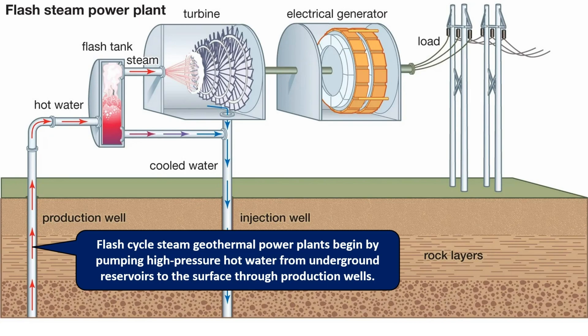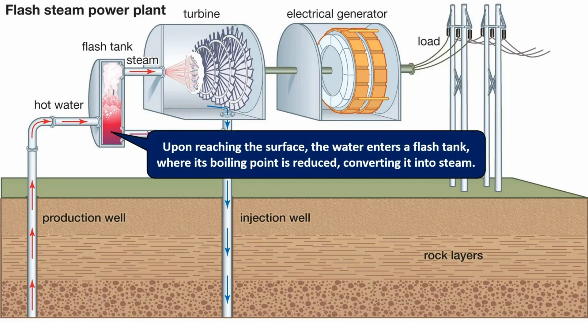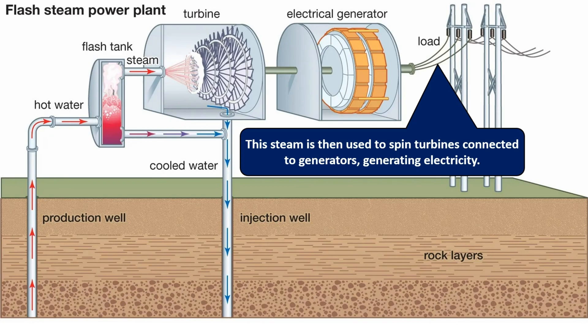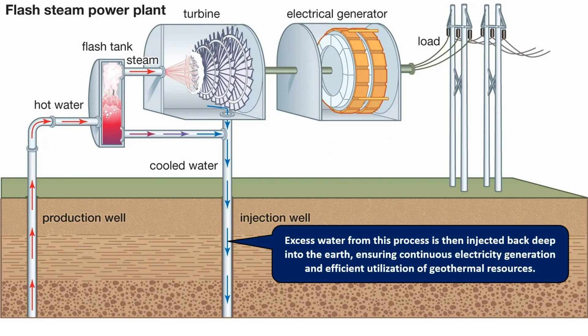Flash steam geothermal power plants begin by pumping high-pressure hot water from underground reservoirs to the surface through production wells. Upon reaching the surface, the water enters a flash tank, where its boiling point is reduced, converting it into steam. This steam is then used to spin turbines connected to generators, generating electricity.